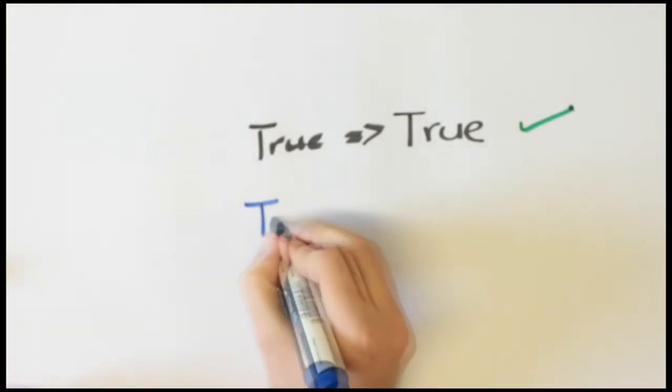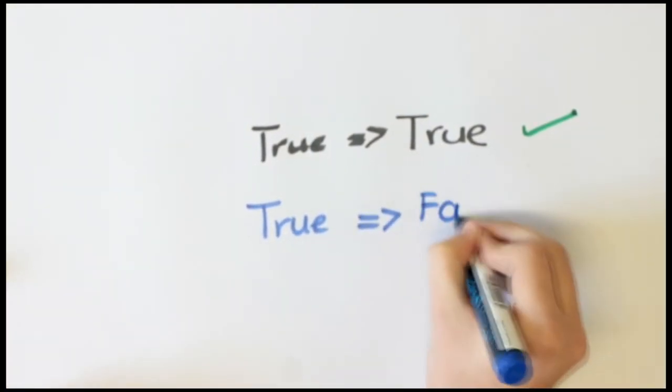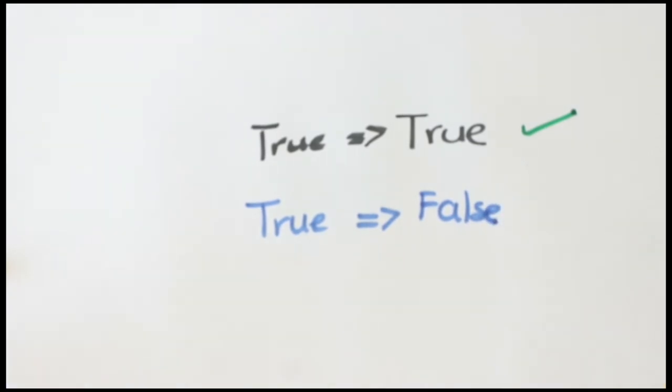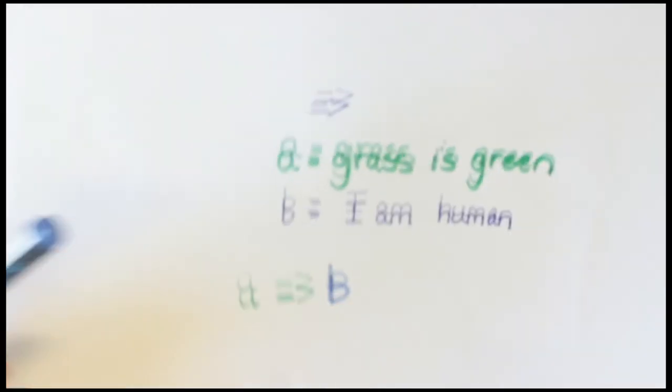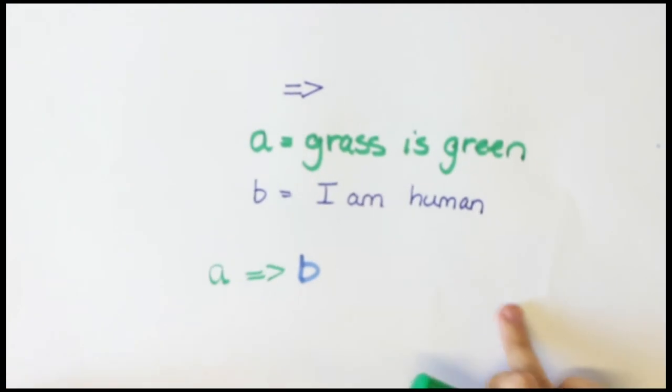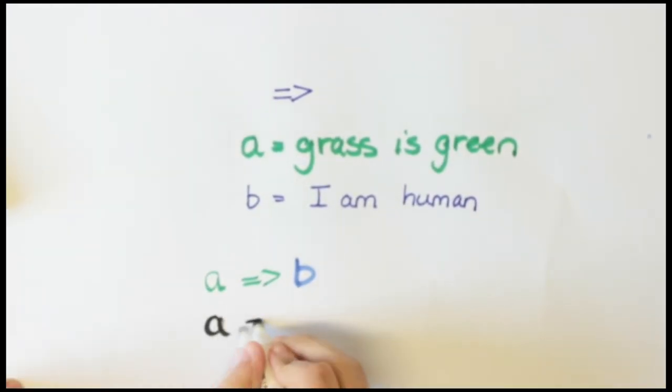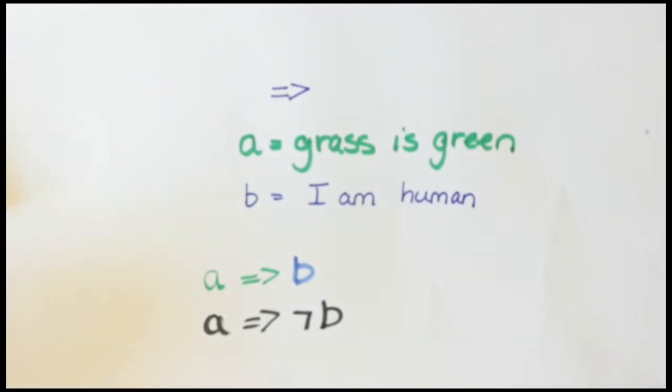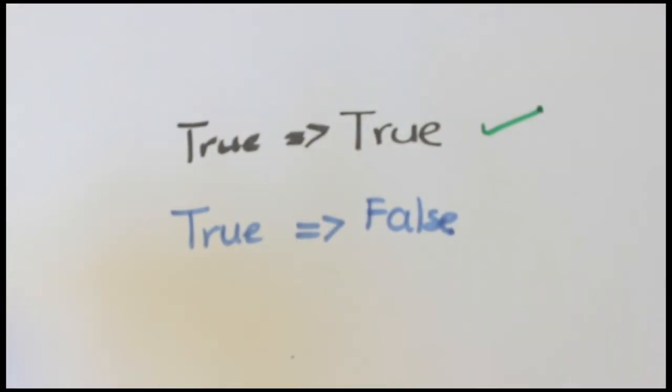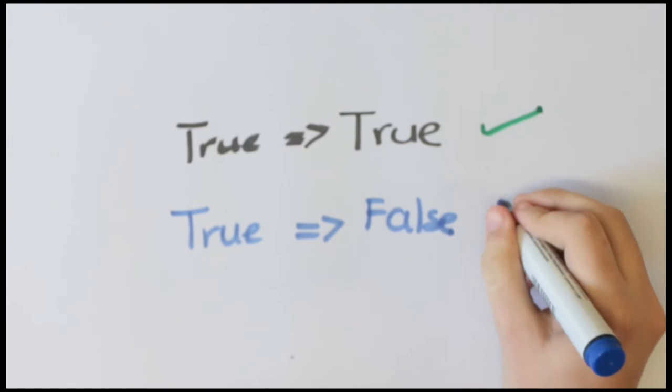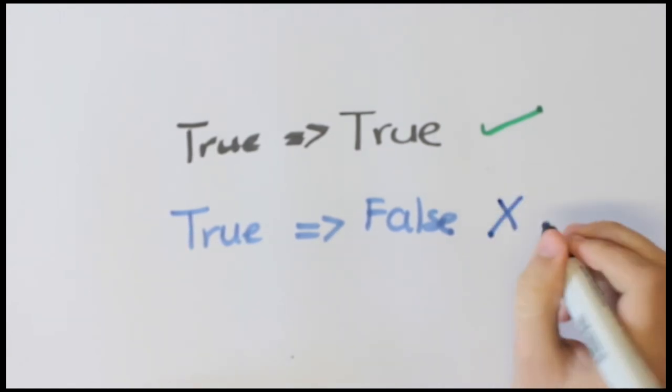Now is true implies false valid? No, that's not allowed. Consider the grass is green implies I am not human. If you start arguing with something true then use it to justify something you know is false, your argument is wrong. So true implies false is false.